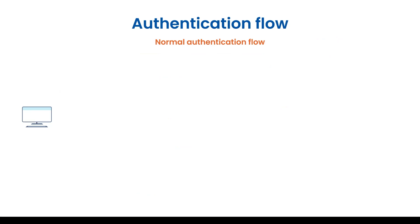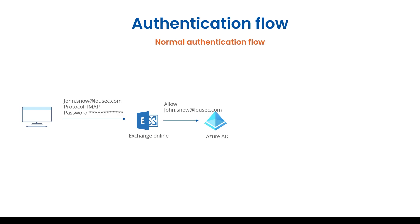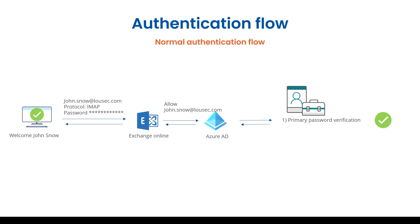To understand the security risk, let's go through an authentication flow with Exchange Online. John Snow uses IMAP with his password and authenticates to Exchange Online. In the background, Exchange Online verifies with Azure AD — 'hey, is this password correct?' Azure AD says yes, it's correct, you may allow it. Note that even if you have MFA enabled for this user, he will not be prompted, as the protocol simply doesn't support it and will not request an MFA prompt.